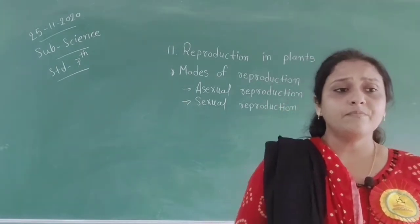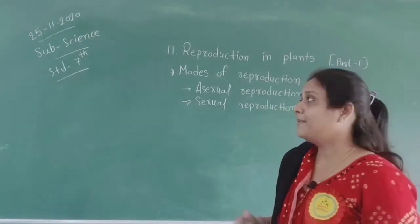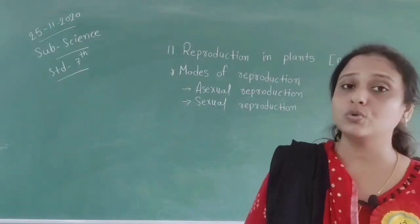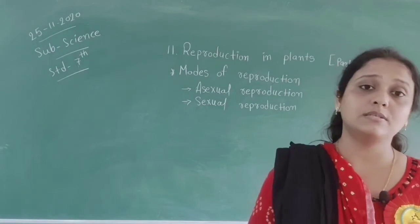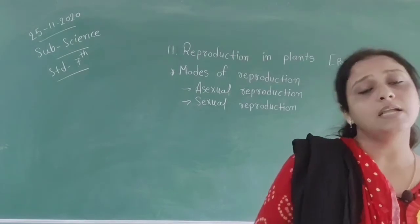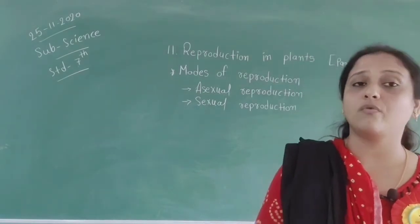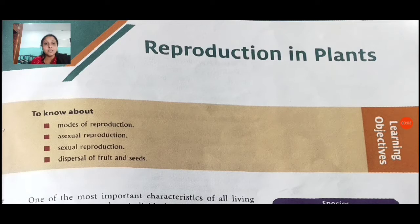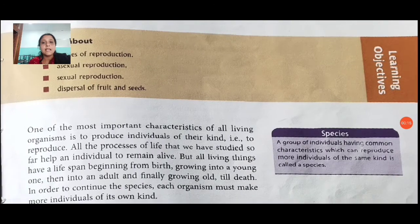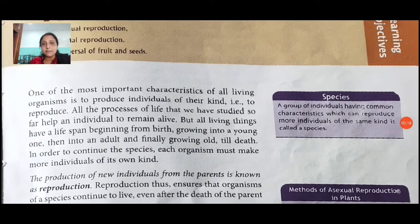We have some modes of reproduction: sexual reproduction and asexual reproduction. We also have some different ways for reproduction. In this chapter we learn about modes of reproduction — asexual reproduction and sexual reproduction — and also the dispersal of fruits and seeds. These are our learning objectives.